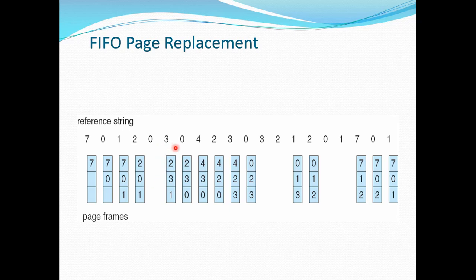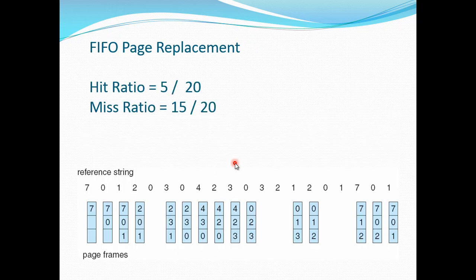Similarly, the next element is 0. Since 1 is the oldest element in the buffer now, 1 will be replaced by 0. This goes on: 2 is replaced by 4, then 3 is replaced by 2, 0 is replaced by 3. This process continues for the rest of the processes. To calculate the hit ratio and miss ratio: there are 5 hits out of 20, giving a hit ratio of 5 out of 20, and a miss ratio of 15 out of 20.